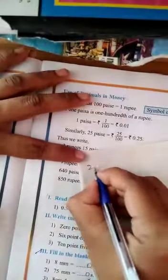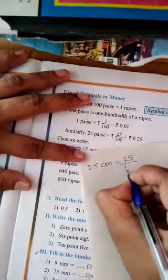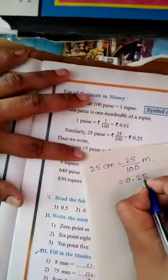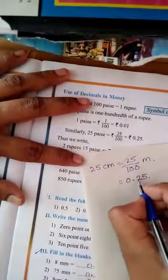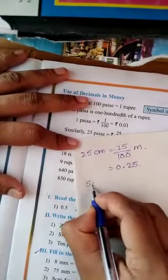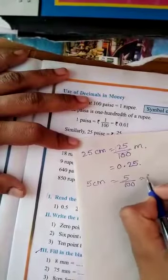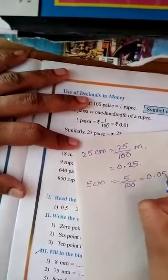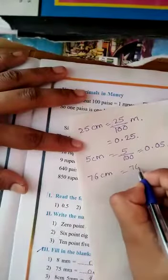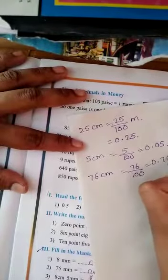Now 25 cm equals 25/100 m, denoted as 0.25 m. If 2 numbers are there, no need to write the zero before the decimal. 5 cm is 5/100, which equals 0.05 m. Similarly, 76 cm equals 76/100, equals 0.76 m.